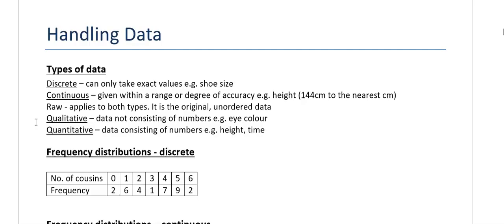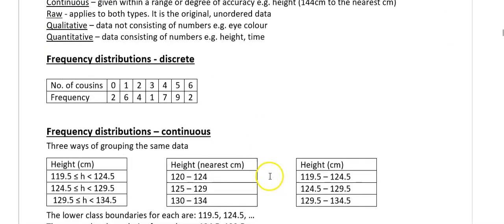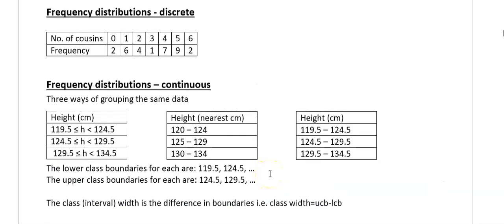Now we'll look at frequency distributions. This is a discrete frequency distribution — just a way of displaying data. In this example, someone has surveyed people on how many cousins they have. So a frequency of 2 next to 0 means two people surveyed have no cousins; 6 next to 1 means six people have one cousin; 9 means nine people have five cousins; and 2 means two people have six cousins. From this you can later find means, standard deviations, and so on.